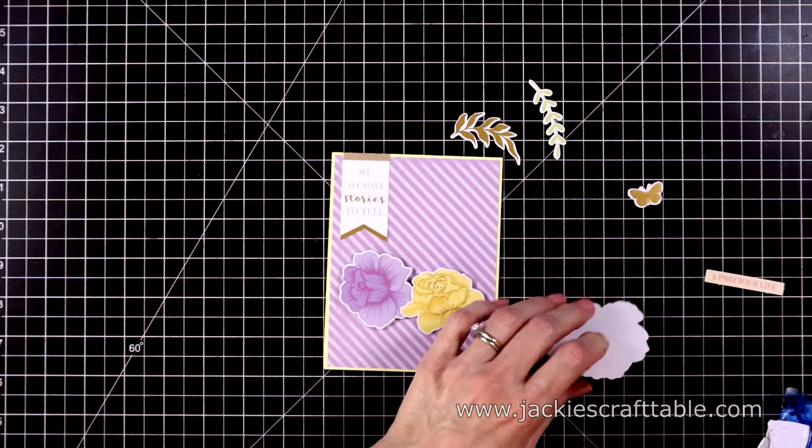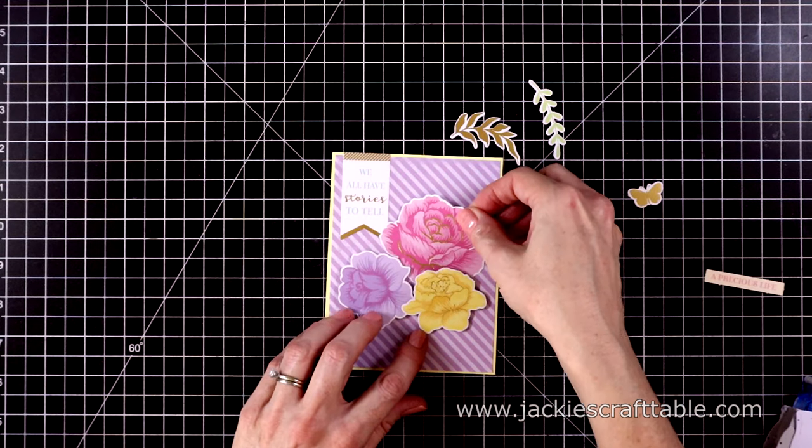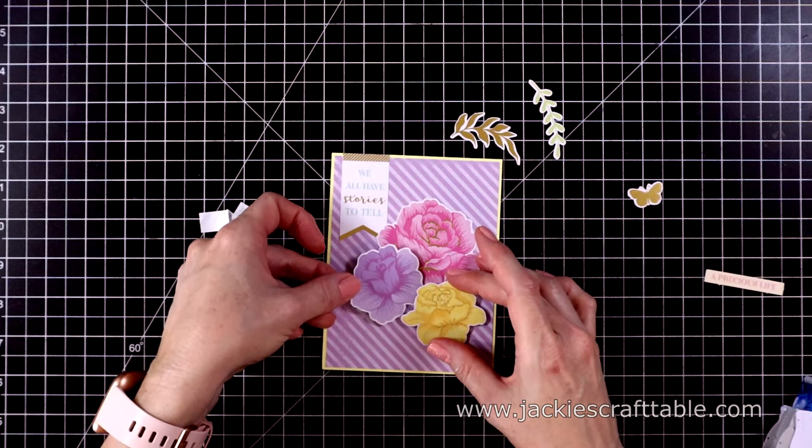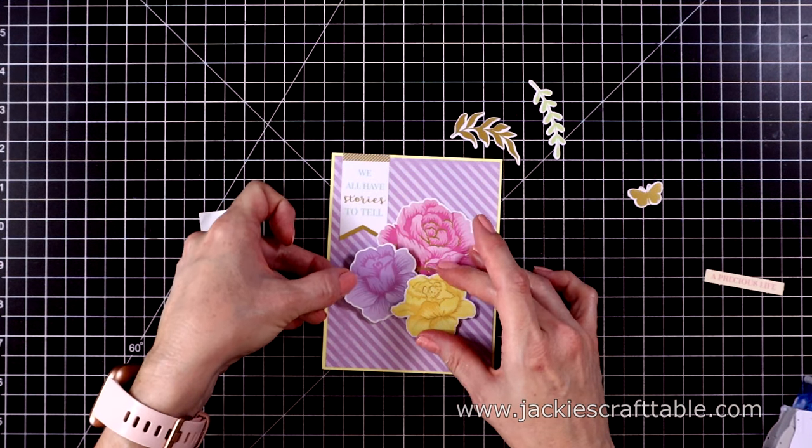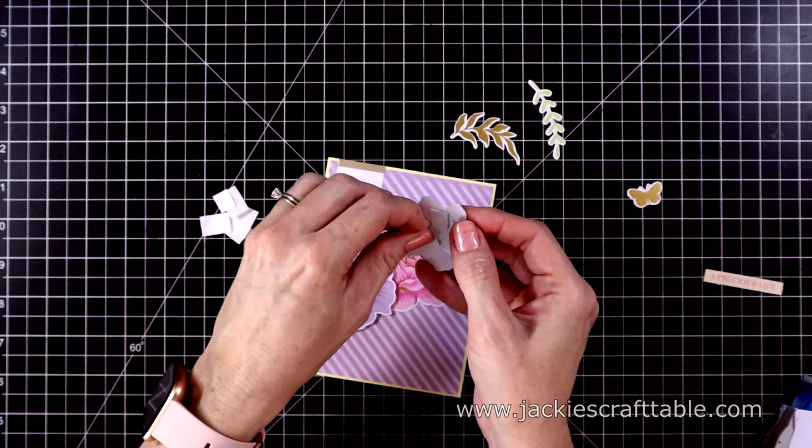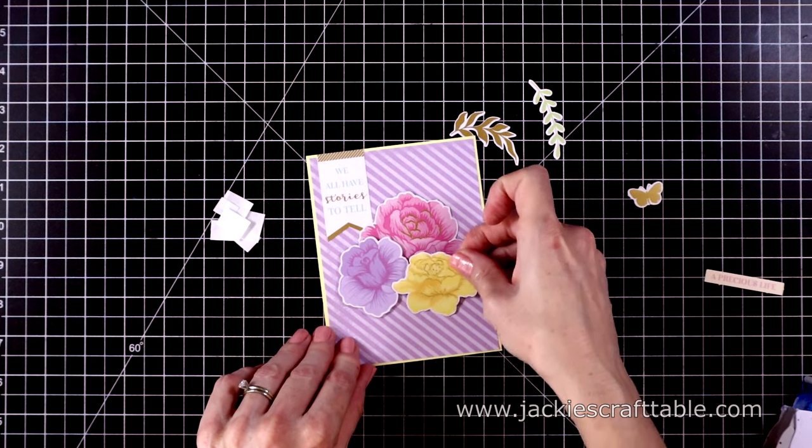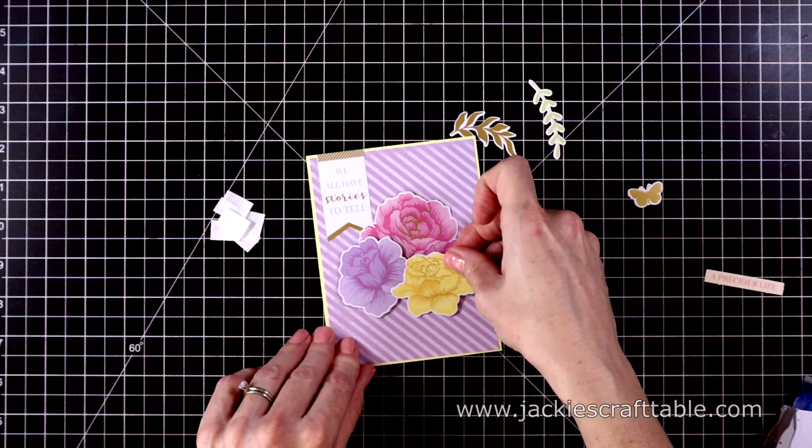The big rose, the big pink one, I'm going to adhere down flat as well. And then the purple and the yellow rose, I'll put some foam adhesive behind those and pop them up. I love that little trio of roses. It just looks so pretty centered on the card.